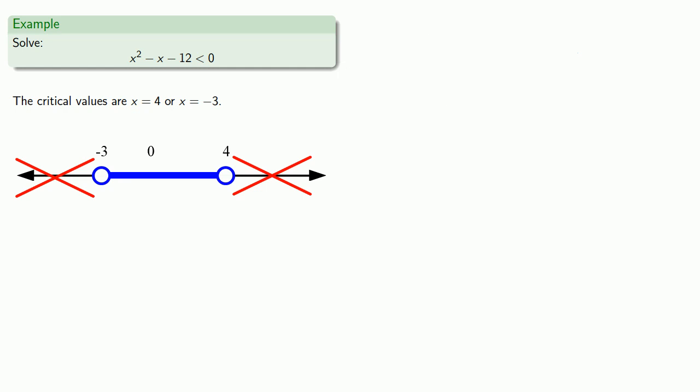And while the graph is a good way to represent the solution, we should also write this in interval notation. The solution set is just this middle portion, which goes from negative 3 up to 4, not including either endpoint. And so in interval notation, we write this as...